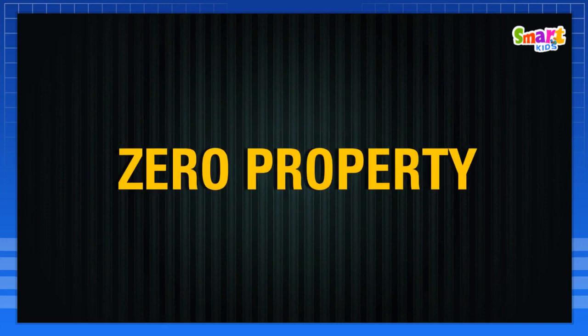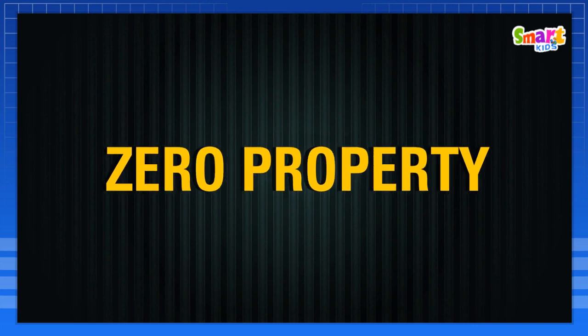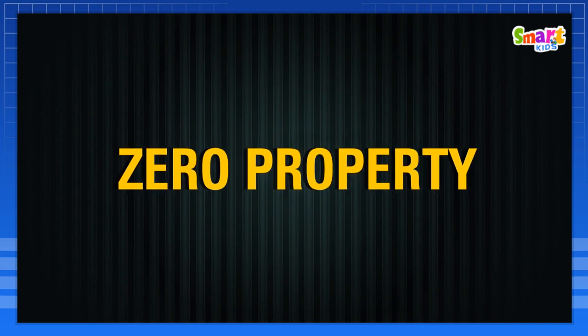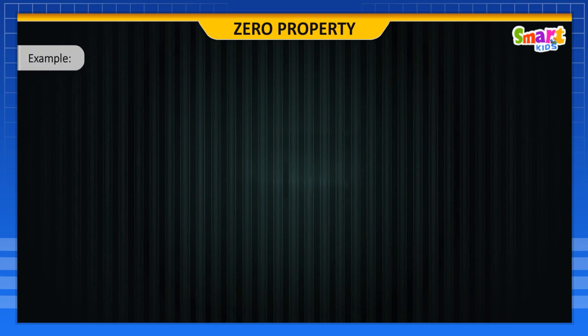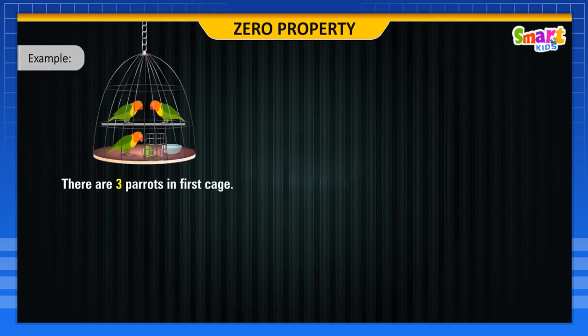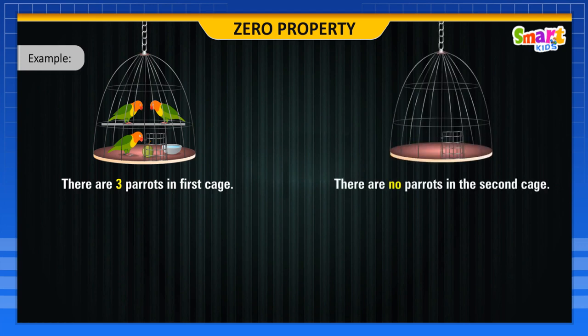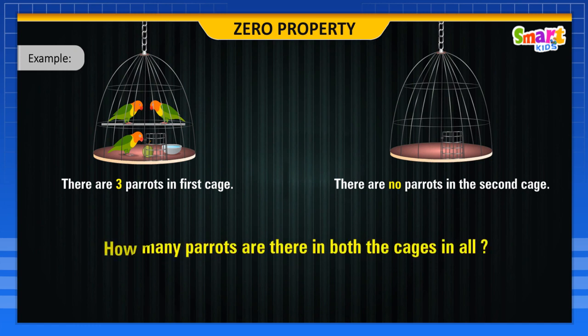Zero Property. Hi children, let us learn the zero property. Look at this example. There are three parrots in the first cage. There are no parrots in the second cage. How many parrots are there in both the cages in all?